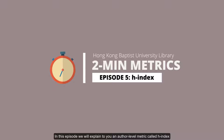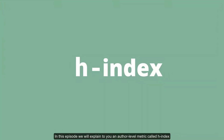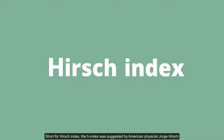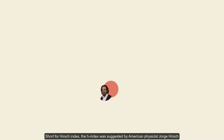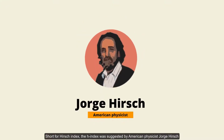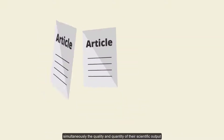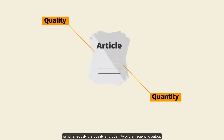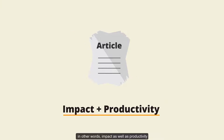In this episode, we will explain to you an author-level metric called H-index. The H-index was suggested by American physicist Jorge Hirsch, who was looking for a simple metric that can help researchers measure simultaneously the quality and quantity of their scientific output — in other words, impact as well as productivity.